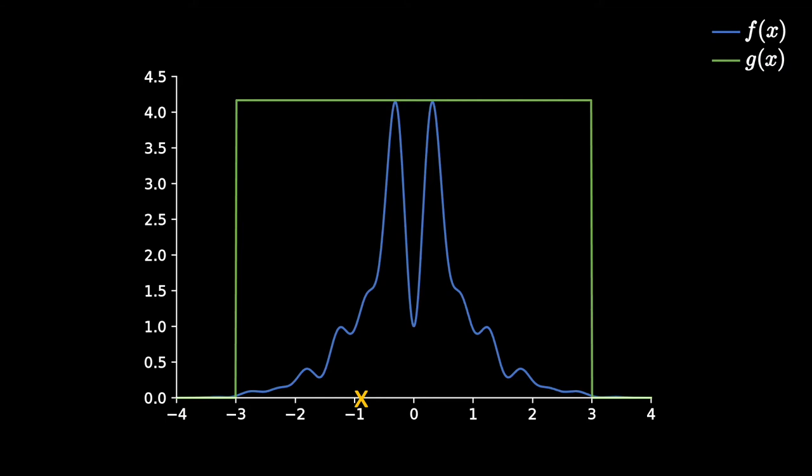As such, this sample is valid for both target and proposal functions. As it is between minus 3 and 3. The difference is that for our proposal distribution function, it is as likely as any other sample. But for our target distribution, it is not the case.